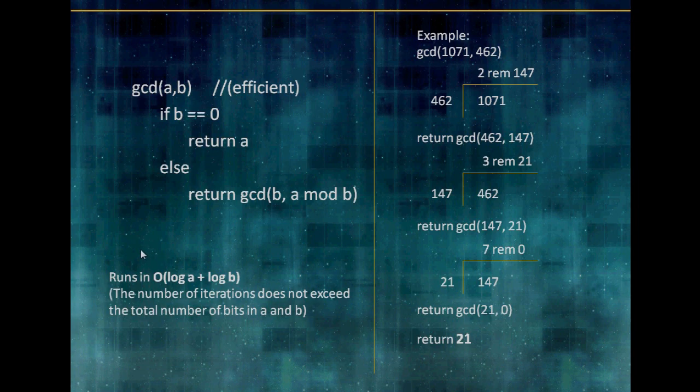And this runs very fast. It runs in big O of log A plus log B time. This basically just says that the number of iterations that this function will do does not exceed the total number of bits in A and B, because in computer science terms, log always refers to log base 2. So say A and B are two 64-bit numbers, this is not going to do any more than 64 plus 64, which is 128 iterations. And 128 iterations to find the GCD of two 64-bit numbers, that is very, very fast.